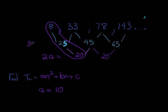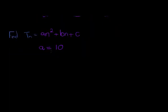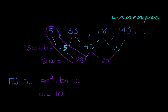Then I know that 3a plus b should give me 25. So 3 times 10 is 30, 30 plus what will give me 25? So 3 times 10 plus b must equal 25, and that means b is equal to 25 minus 30, or negative 5.